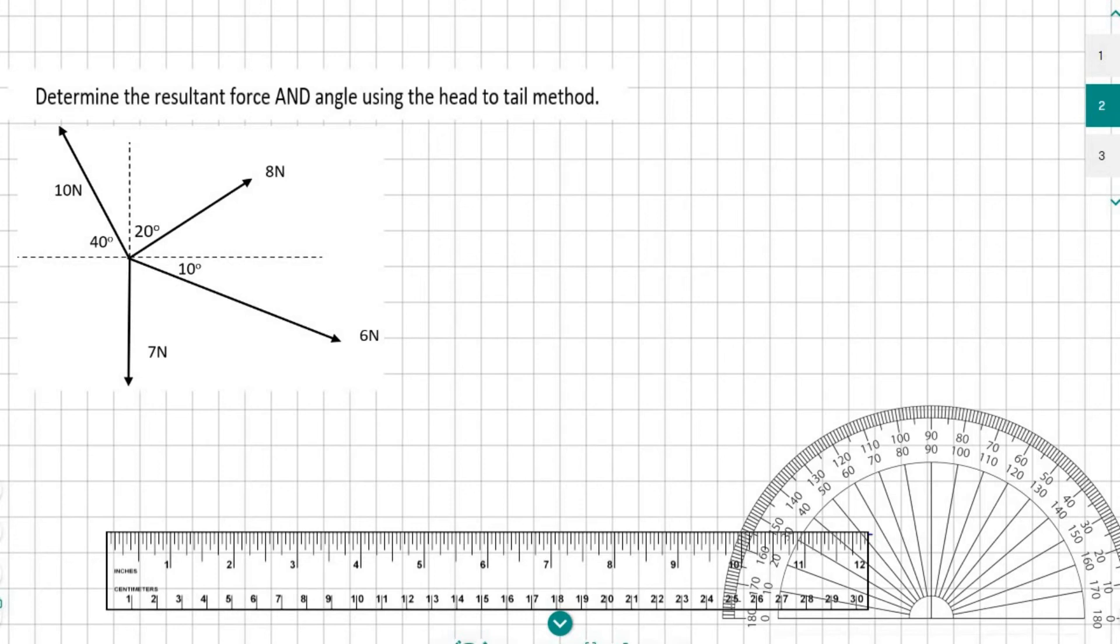We have to determine the resultant force of these four forces: 10, 8, 6, and 7 newtons. When we use the head-to-tail method, we need to have a starting point. I'm going to start over here and choose the 8 newton. But first we should choose a scale. Looking at the numbers 10, 8, 6, and 7, a nice scale would be 1 centimeter equals 1 newton.